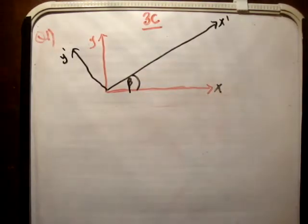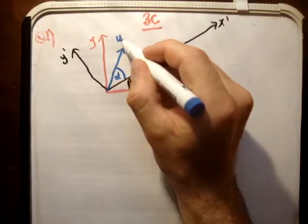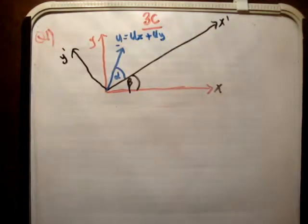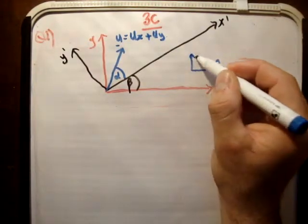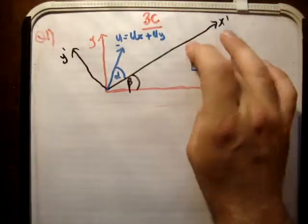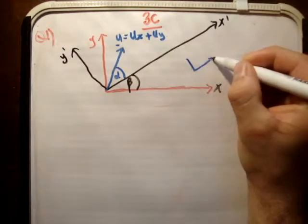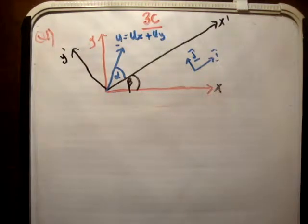The next thing we need to do is draw the initial velocity vector. The initial velocity vector is with respect to the hill, so it's at an angle alpha to the hill. u is equal to u sub x plus u sub y. In terms of unit vectors, we're going to resolve everything in the x prime, y prime plane, so I suggest you define the unit vectors accordingly.